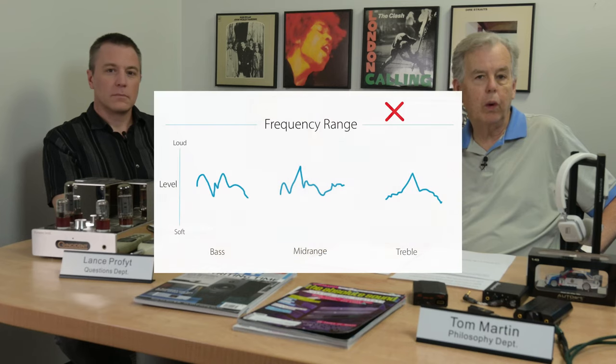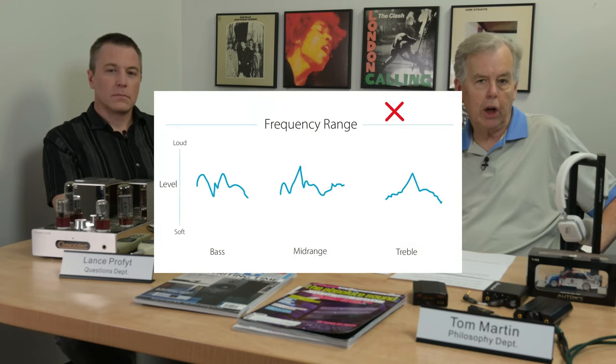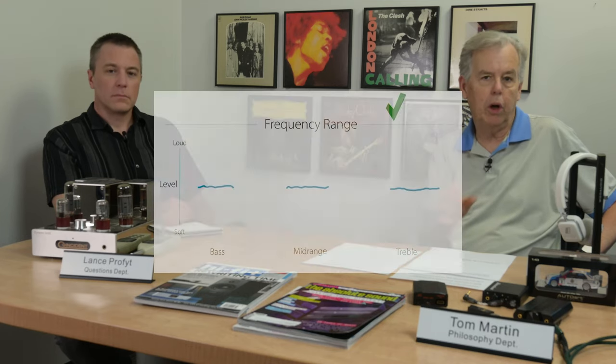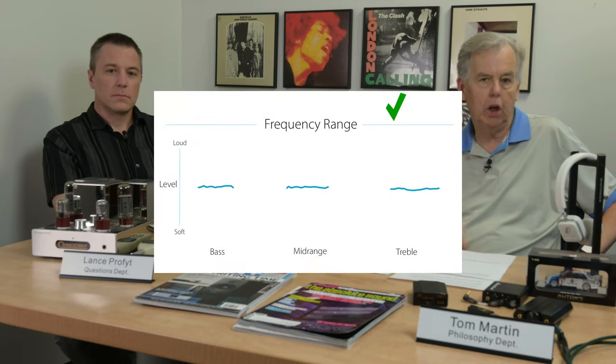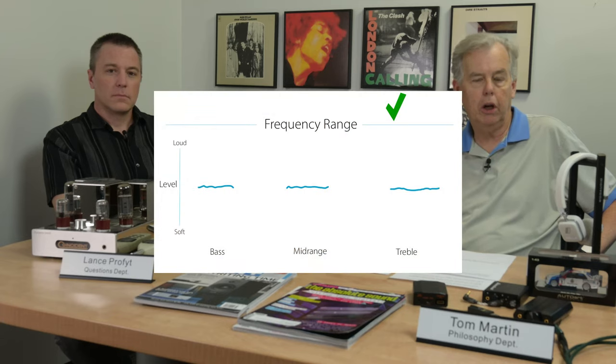We also covered smoothness — the frequencies within each range, within the bass range, within the mid range, and within the treble area are approximately equal instead of being peaky, with peaks and valleys. We'll put some images on the screen to help you visualize this.